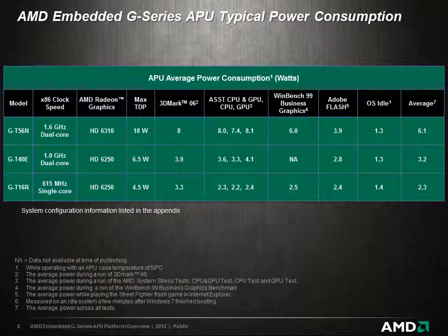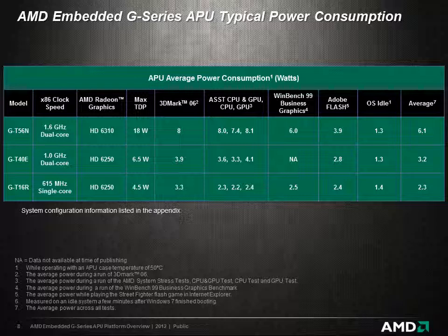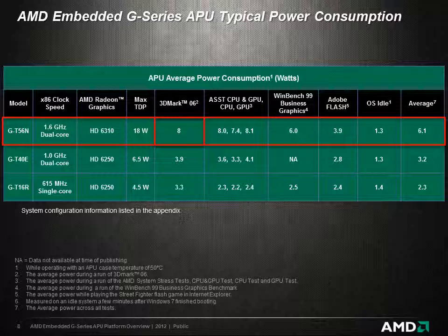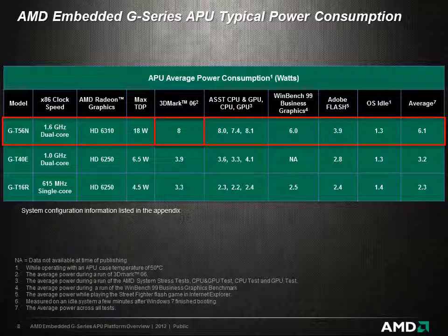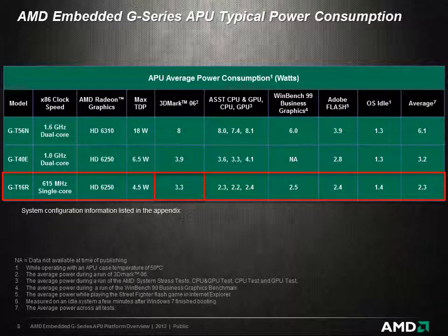It is important to emphasize the difference between TDP and the likely power consumption that will be seen on a G-Series-based design running an actual application. The TDP of a part can be misleading since it doesn't accurately represent the actual power drawn during operation for a particular embedded application. For example, while running 3DMark06 — which gives the GPU, CPUs, and a portion of the I/O a significant workout — the 18-Watt TDP version of the APU only consumes 8 watts, and the very low-power AMD G-T16R APU consumes just under 3.5 watts average power.